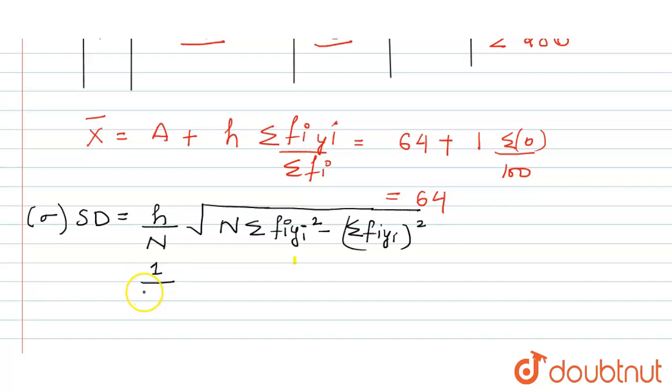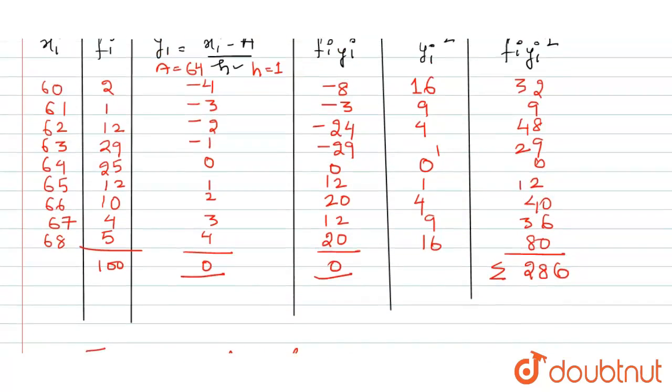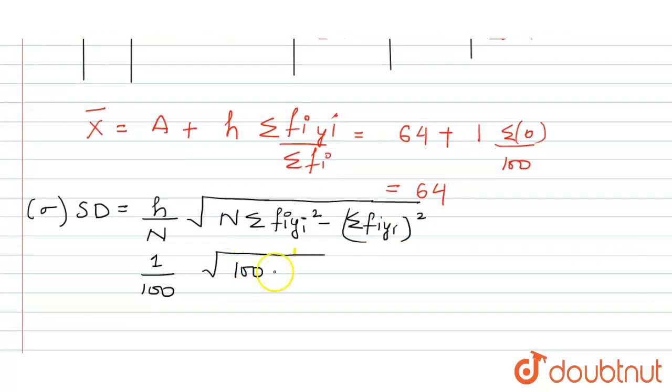So it will become, the value of h is 1 and n is 100, and the value of n as it is 100, and summation of fi yi square, fi yi square, that equals to 286, and this value is 0.